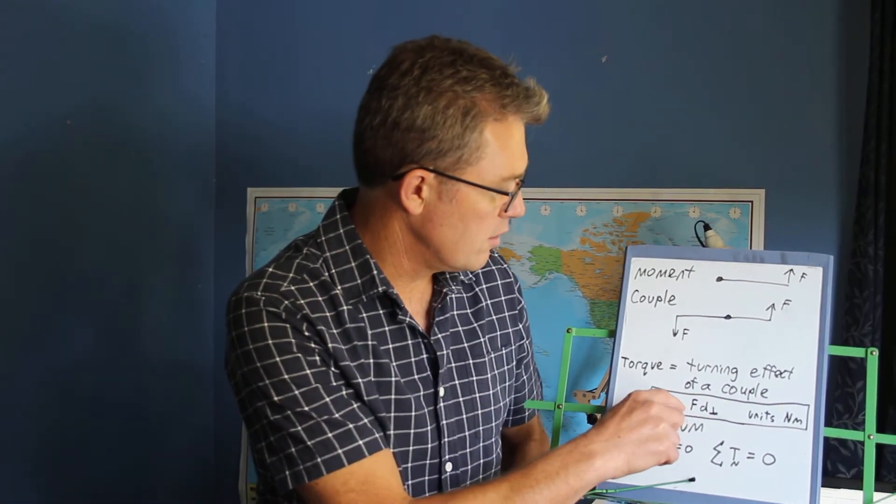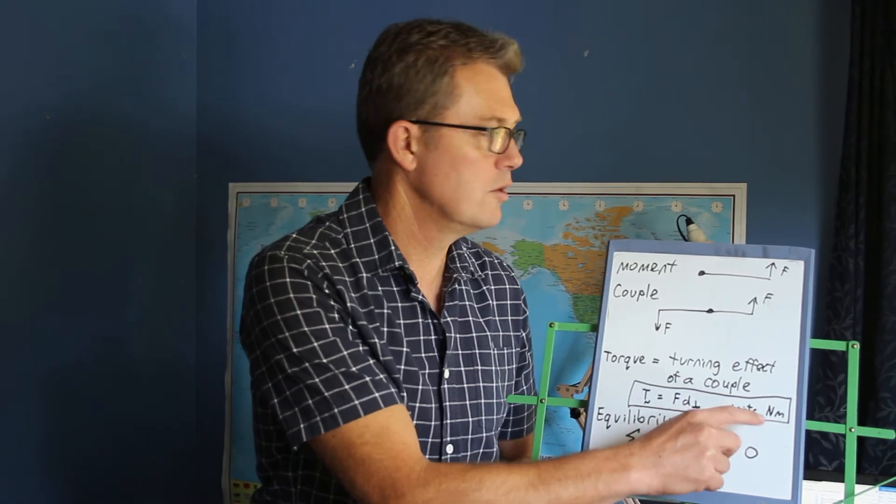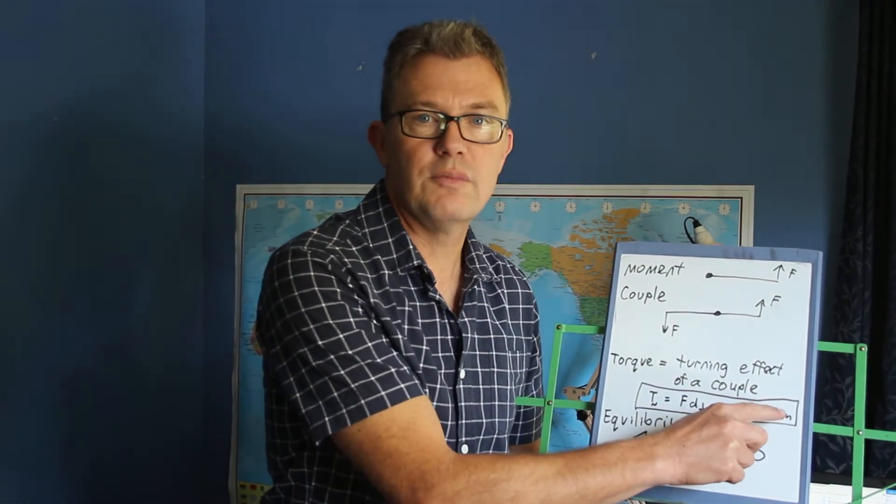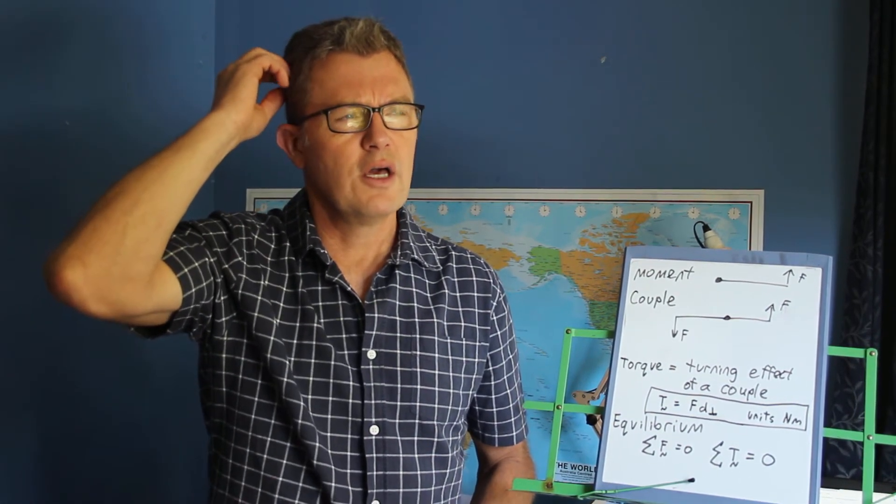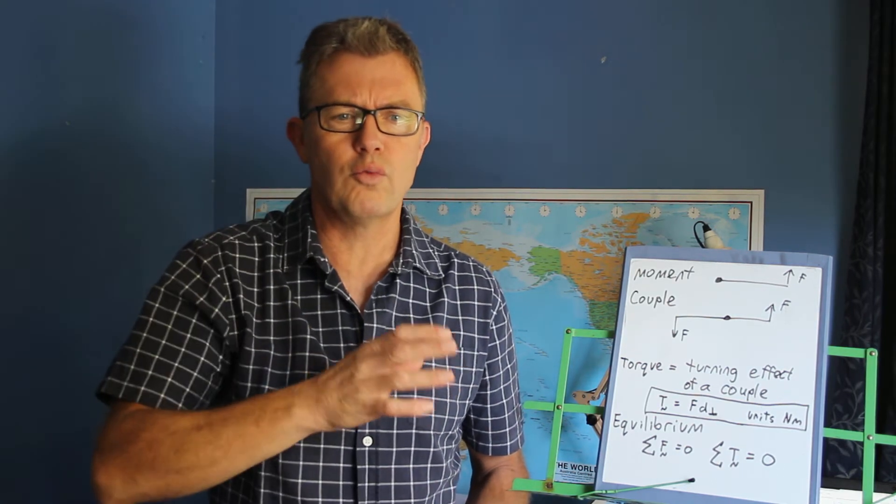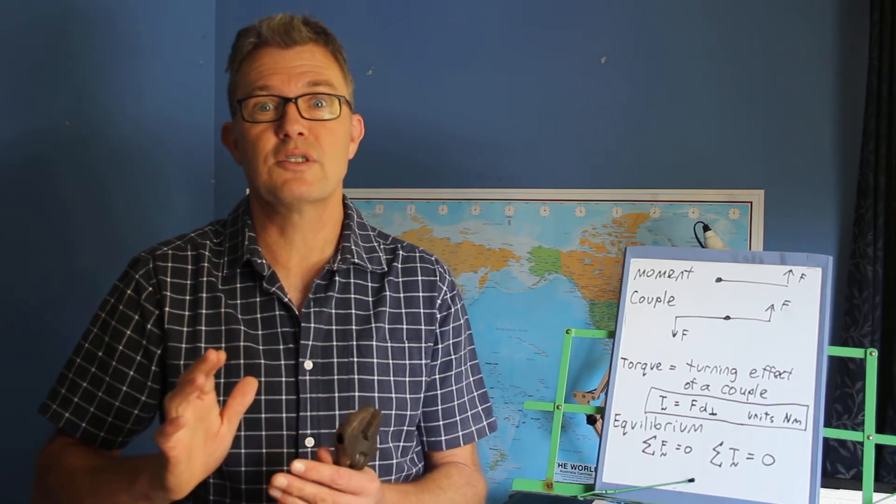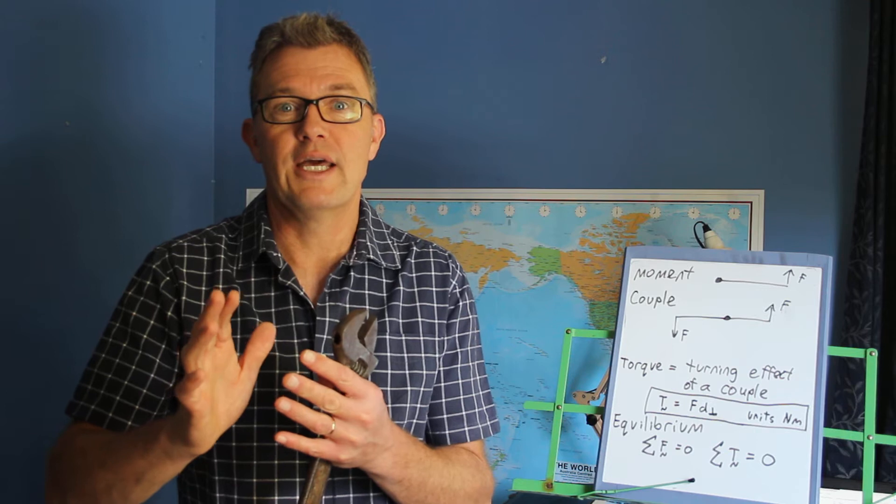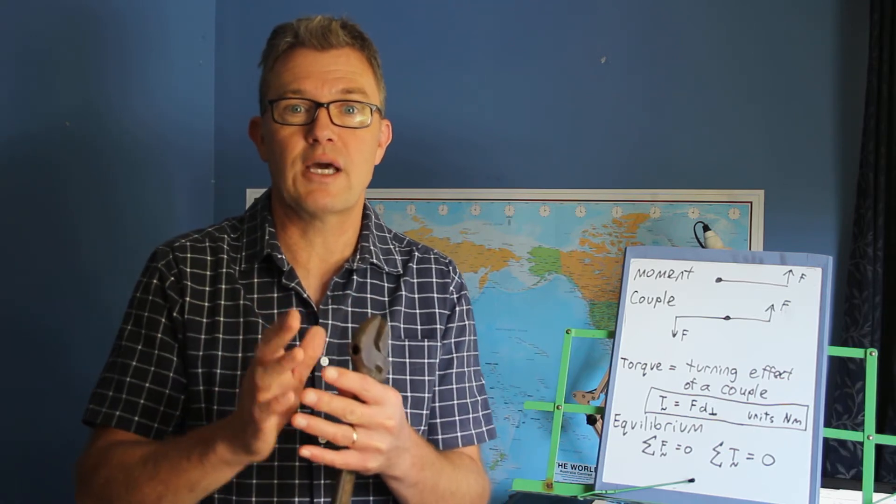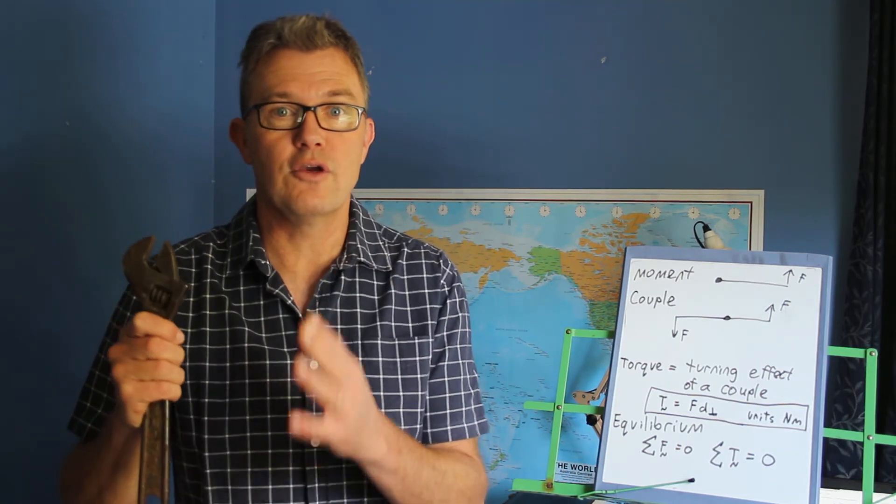Now, the units, when you think about it, force is measured in newtons, distance is measured in meters. So the units for torque, or for a moment, or for a couple, the units are newton meters. Now, you might think to yourself, that's the same unit we use for energy and work, because work done is force times distance. Yes, it is. But work done is equal to force times the distance moved in the direction of the force. This is force multiplied by the distance from a pivot, and the force and the distance are perpendicular to each other. Very different. So work done in energy is very different from torque and moments, even though the units are the same.